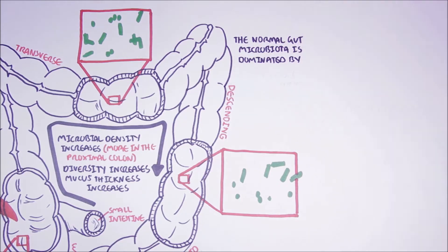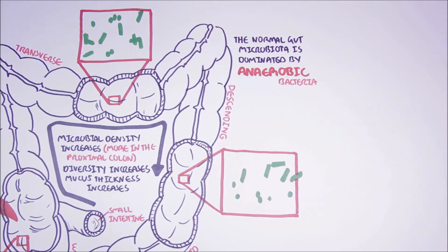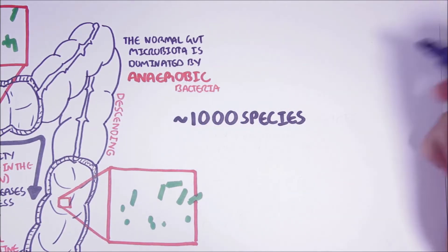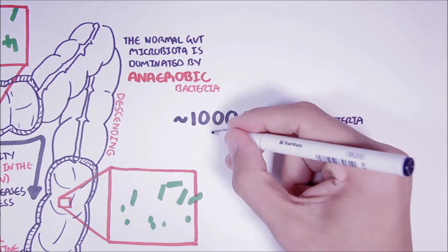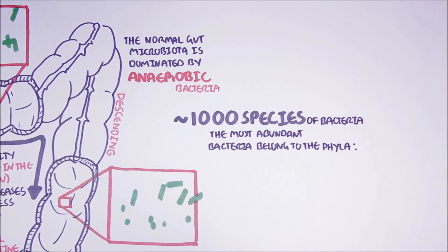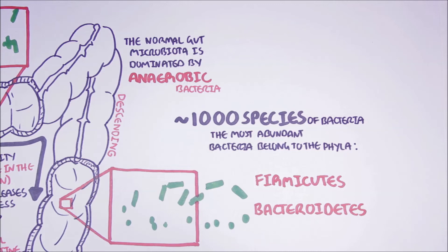Now, the normal gut microbiota is dominated by anaerobic bacteria. But there are some aerobic and facultative anaerobic bacteria that are found in the intestine. In total, there are up to 1,000 species of bacteria living in our gut, that interestingly, only belong to a few known bacterial phyla. The most abundant bacteria come from the phyla Firmicutes and Bacteroidetes.